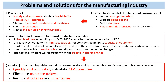As a solution, by planning with certain constraints incorporated, we can master the ability to schedule manufacturing with lead time reduction. Through this, we can simultaneously solve many problems, such as quickly and accurately calculating available to promise, eliminating due date delays, and reducing shortages and inventories. In the following, I will explain how to solve all these problems by proper production scheduling.